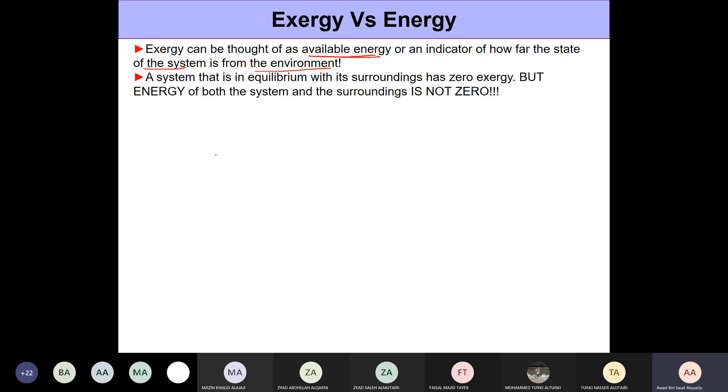When the system eventually comes in equilibrium with the surroundings or the environment, it has zero exergy because there's no potential for interaction. Nothing can happen. Heat transfer cannot happen. No sort of transfer can happen, and they're all at the same properties.